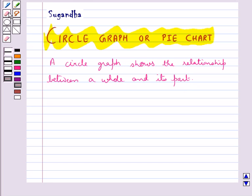Here we divide the whole circle into sectors and the size of each sector is proportional to the information that it represents.